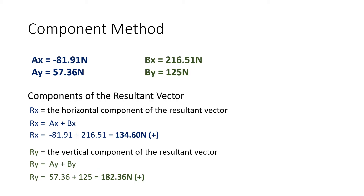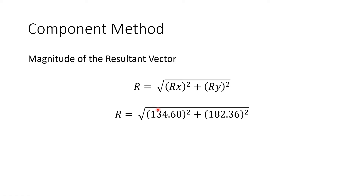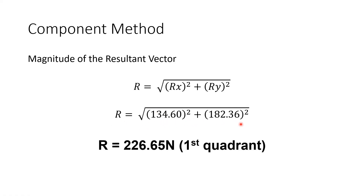Since both Rx and Ry are positive, the resultant vector is in the first quadrant. To get the magnitude of the resultant vector, we use the formula: the magnitude equals the square root of Rx squared plus Ry squared. Substituting the values of Rx and Ry, we get the magnitude of the resultant vector equal to 226.65 N. Since Rx and Ry are both positive, this confirms the resultant vector is in the first quadrant.